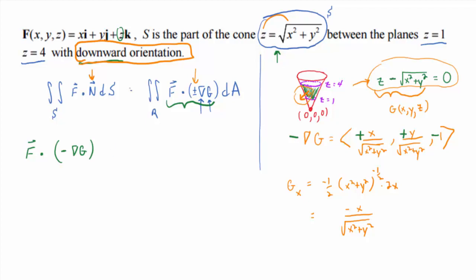Now, let's take that dot product, and, you know, I gotta say, it's probably a good idea to actually write these guys right next to each other. So, in component form, F, the vector field is x, y, z, and then you just found out that negative del G is x over the square root of x squared plus y squared, comma, y over the square root of x squared plus y squared, comma, negative one.